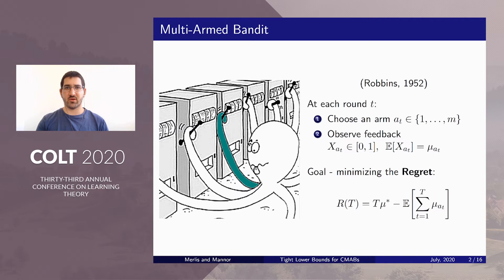I'll start with a very quick recap on multi-arm bandits. In the MAB setting, at each round the agent selects a single arm out of M possible arms, and then observes feedback for the arm he chose. The goal is to minimize its regret, which is the expected difference between the reward of the best arm and the cumulative reward of the agent's actions.